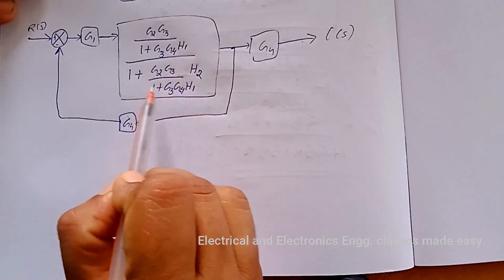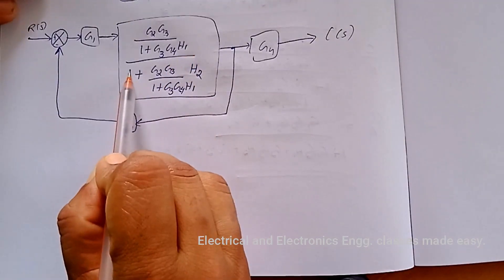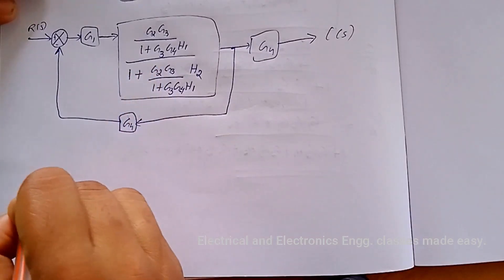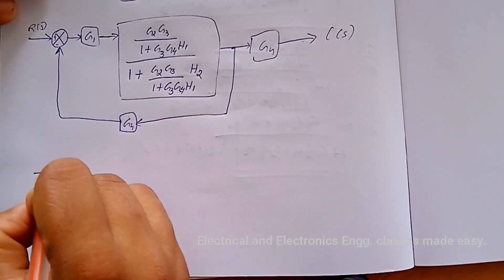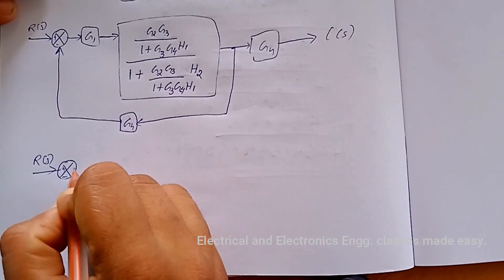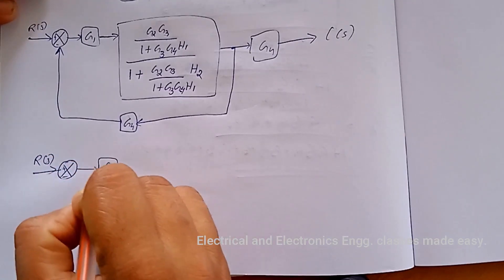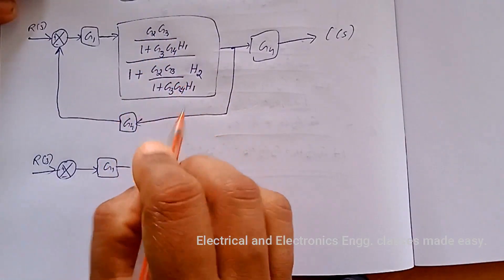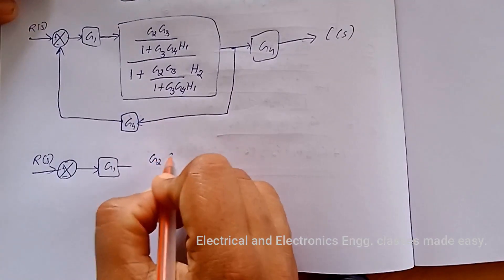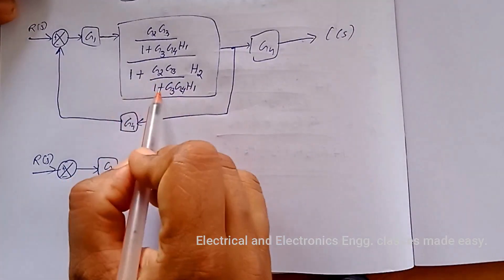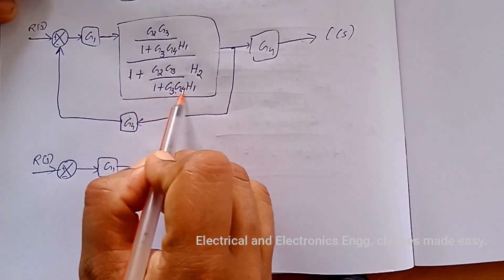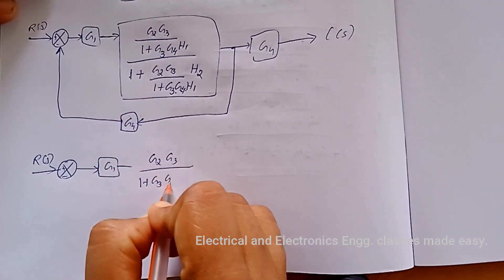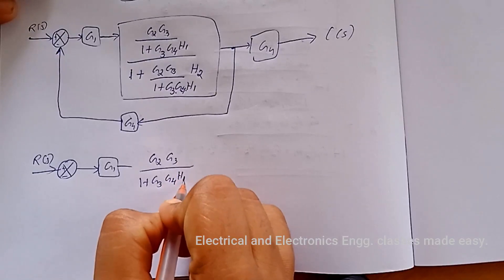Now we can reduce this transfer function by taking the LCM. While taking the LCM these two will cancel, and we multiply the LCM with the numerator. So we get R(s), then plus/minus, then G1, then G2·G3 divided by (1 + G3·G4·H1 + G2·G3·H2).